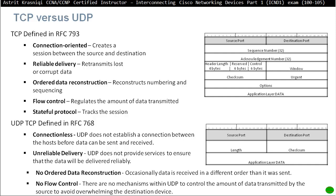UDP was defined in RFC 768 and is connectionless — UDP does not establish a connection between hosts before data is sent and received. It provides unreliable delivery and does not ensure data will be delivered reliably. There is no ordered data reconstruction, and data is occasionally received in a different order than sent. There is no flow control; no mechanism within UDP controls the amount of data transmitted to avoid overwhelming the destination. The UDP header is so much smaller than the TCP header.